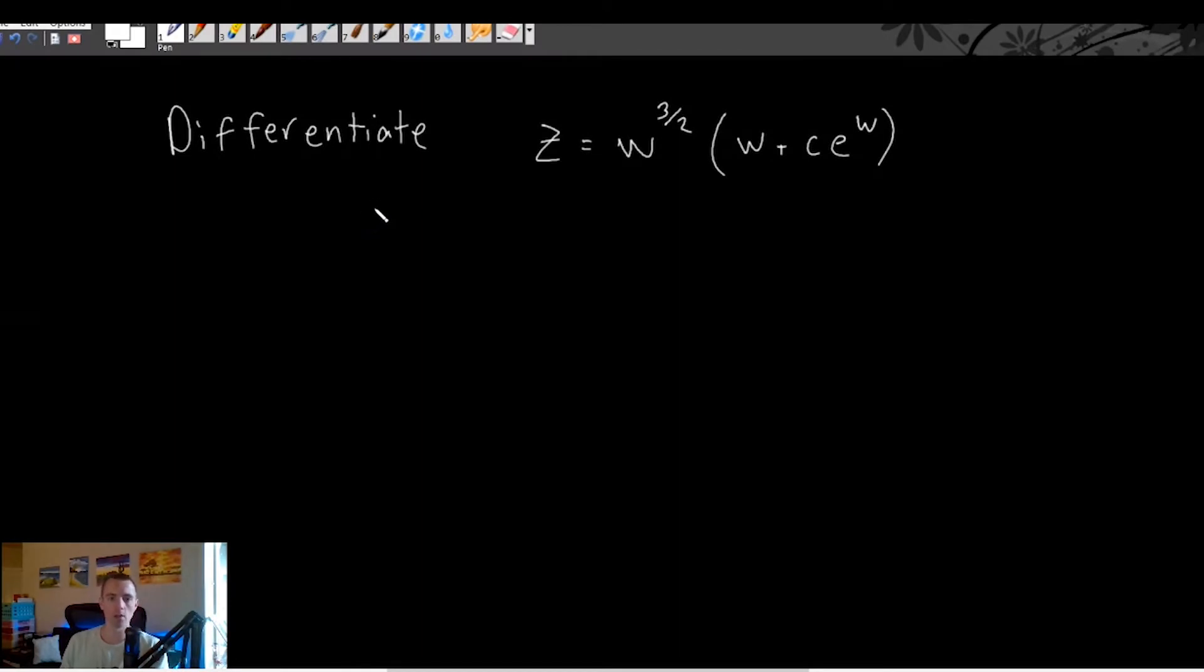We're going to differentiate z equals w to the three halves times w plus c e to the w within parentheses.